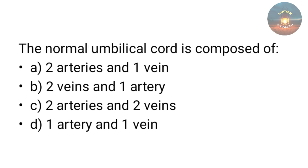The normal umbilical cord is composed of — two arteries and one vein, two veins and one artery, two arteries and two veins, or one artery and one vein? The answer is two arteries and one vein. Remember: two A, one V — two arteries, one vein.